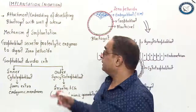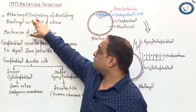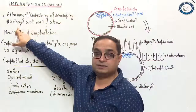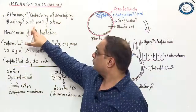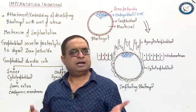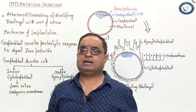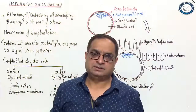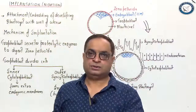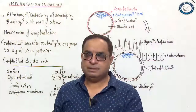That process of attachment or embedding of the blastocyst with the wall of the uterus is called implantation. Implantation is defined as the attachment or embedding of the developing blastocyst with the wall of the uterus. Blastocyst is the blastula in the case of mammals. For non-mammals, we say blastula.